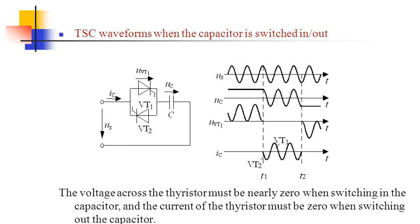TSC waveforms when the capacitor is switched in/out. The voltage across the thyristor must be nearly zero when switching in the capacitor, and the current of the thyristor must be zero when switching out the capacitor.